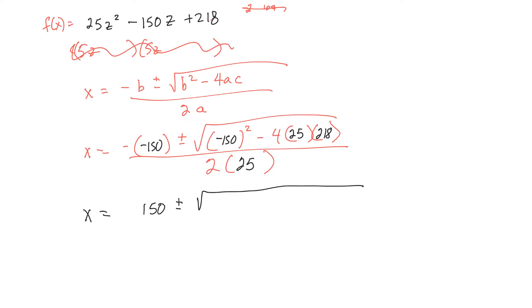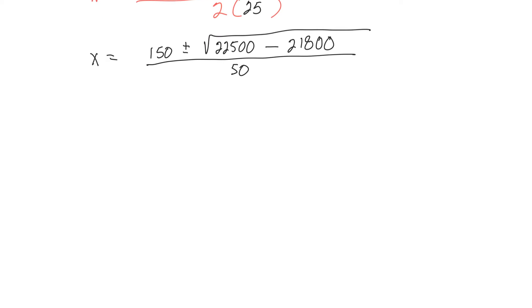Inside here, 150 squared. 225 with a couple of zeros. Minus that would be 100. So, it would be 218 with two zeros on it. Is that right? I think so. All over 2 times 25 is 50. Okay. Let's keep going. 150 plus or minus the square root of 225 minus 218. Is that just 700? No, no. 15 minus 8, 7. Yeah, 700. 700 all over 50.